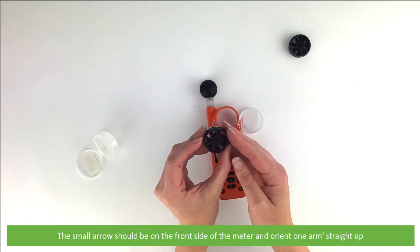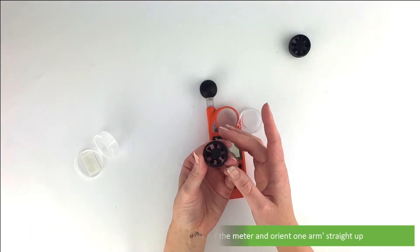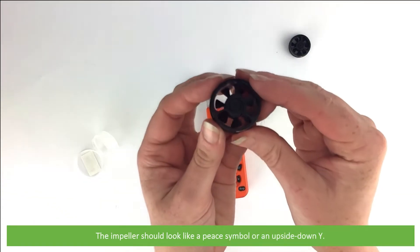For the new impeller, the small arrow should be on the front side of the meter and orient one arm straight up. The impeller should look like a peace symbol or an upside down Y.